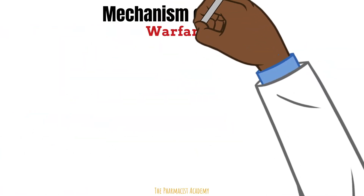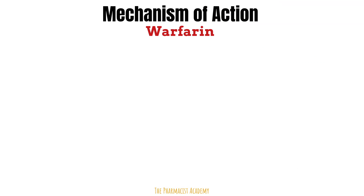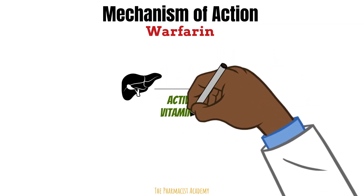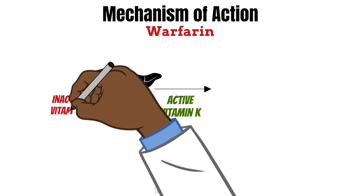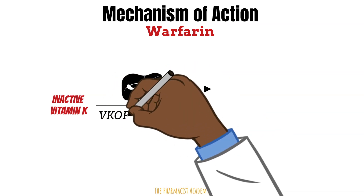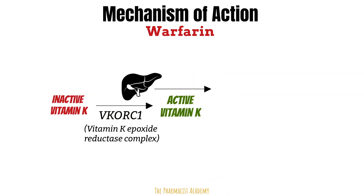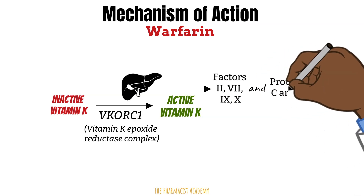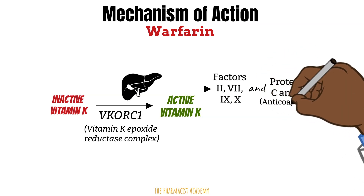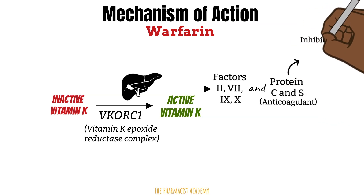To appreciate the mechanism of warfarin, we need to learn about the production of clotting factors. The clotting factors are produced by the liver. Warfarin focuses on the clotting factors that require vitamin K for production — specifically the active form of vitamin K. The vitamin K we get from our diet is inactive and gets converted to the active form by vitamin K epoxide reductase complex. With the help of active vitamin K, the liver produces specific clotting factors and also Protein C and S, which are our body's natural anticoagulants. Protein C and S inhibit factors 5 and 8.